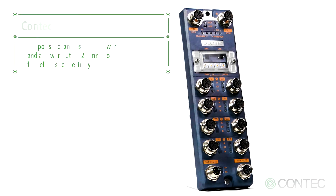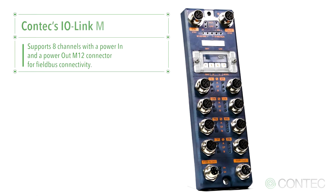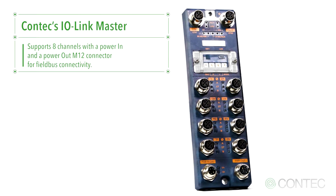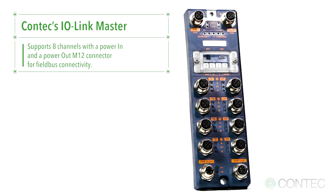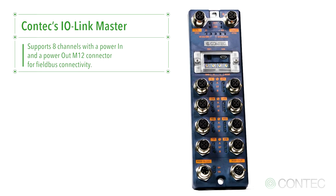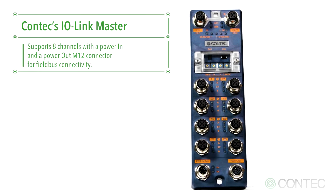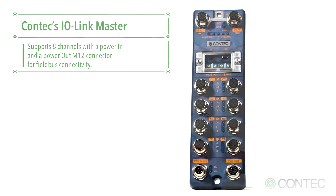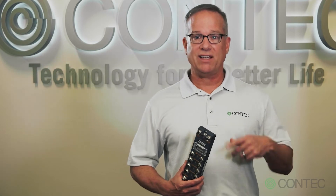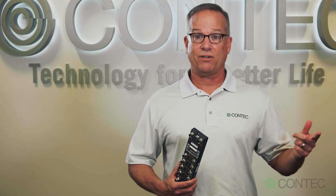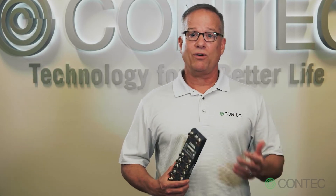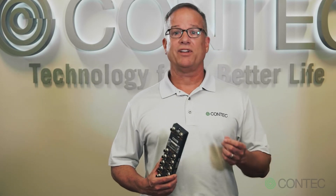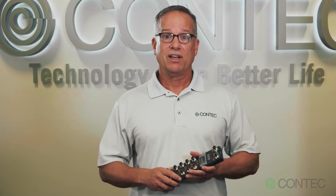Contact's IO-Link Master supports eight channels with a power in and power out M12 connector for field bus connectivity. This will allow multiple units to be daisy-chained together. You don't need to have separate power supplies for each module.